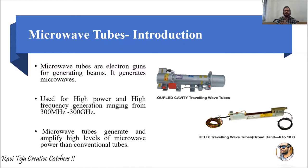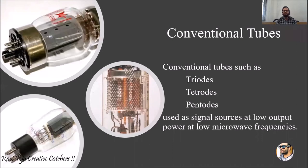Microwave frequencies range from 300 megahertz to 300 gigahertz. These microwave tubes generate and amplify high levels of microwave signals compared to conventional tubes. In older electronic devices, there was a need for less power with less frequency, so conventional tubes — triodes, tetrodes, and pentodes — were used.